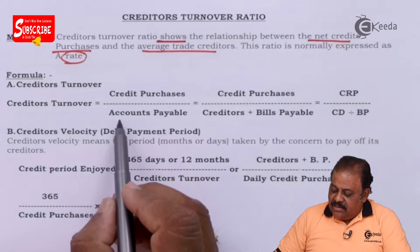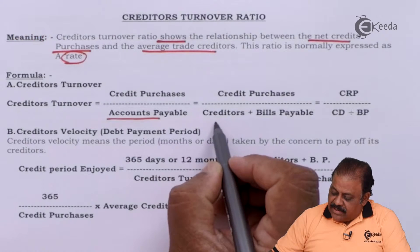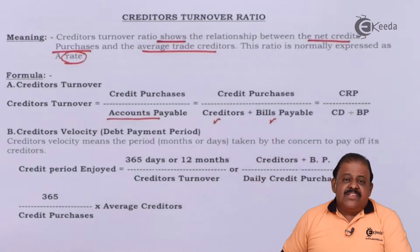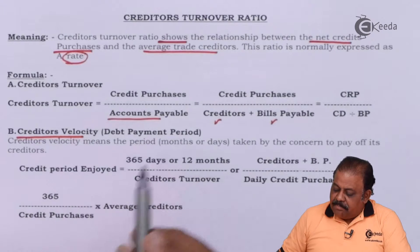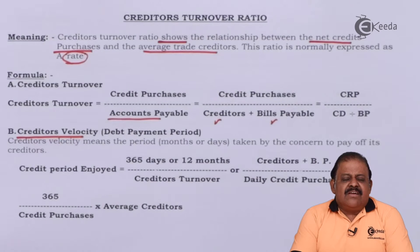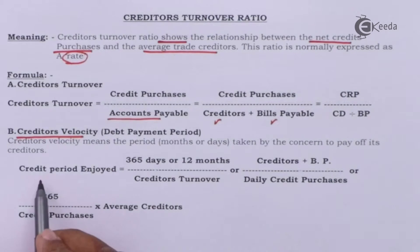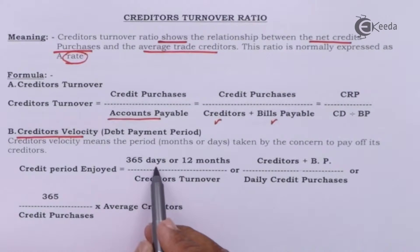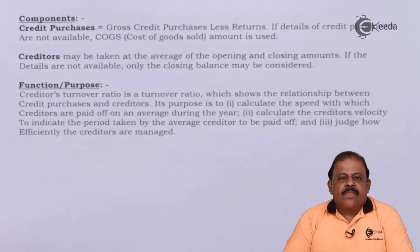Credit purchases divided by accounts payable. Here, accounts payable means creditors plus bills of exchange accepted for the suppliers. This ratio shows how much time you are taking to make payment to your suppliers — it shows the average period of making payment. Credit period enjoyed equals 365 days, or 12 months, divided by creditors turnover.